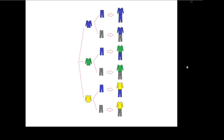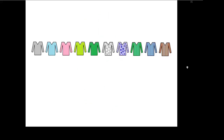Now let's discuss the addition case with a different scenario. We have ten shirts: five with a simple design, two with circles, and three with a stripe, and I want to wear one of them. What is the probability that I wear a simple design? There are five choices out of ten possibilities, so five divided by ten — a 50% probability. What is the probability of wearing a stripe design? Three choices out of ten, so a 30% probability.